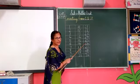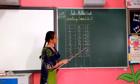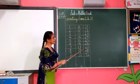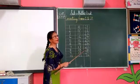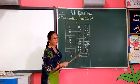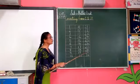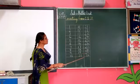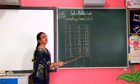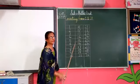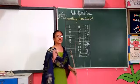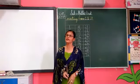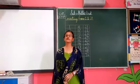2, 6 — 26. 2, 7 — 27. 2, 8 — 28. 2, 9 — 29. 3, 0 — 30. So this is the way you will learn your counting.